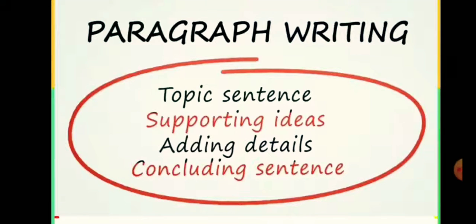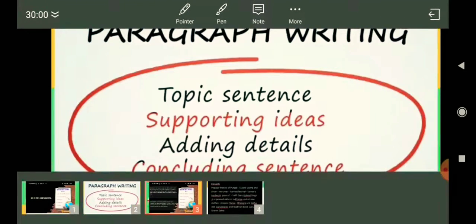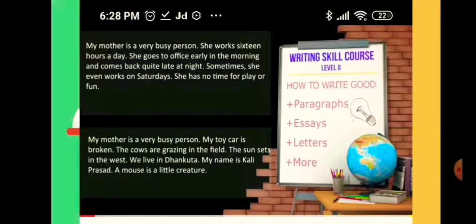Whenever we are writing a paragraph, always start your paragraph with a topic sentence. Then you will write some supporting ideas and supporting sentences, add some details, and at last write a concluding sentence. Now see, they have given two paragraphs — both are on 'My Mother.'